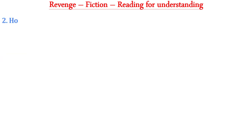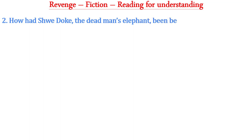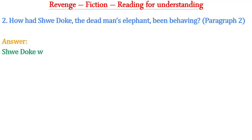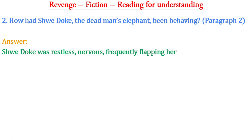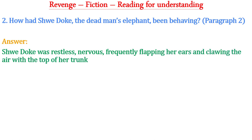Question two: How had Shuidok, the dead man's elephant, been behaving? This question is from paragraph two. The answer is: Shuidok was restless and nervous, frequently flapping her ears and clawing the air with the top of her trunk.